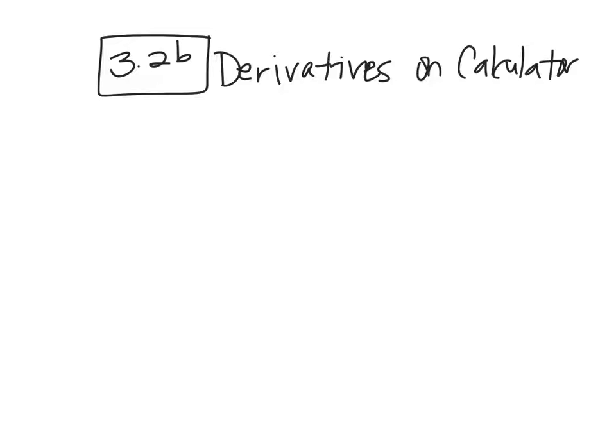All right, so let's remember that in order to be differentiable, that means you have a derivative. Remember, you cannot have those four things: corner, cusp, vertical tangent, or discontinuity, okay?